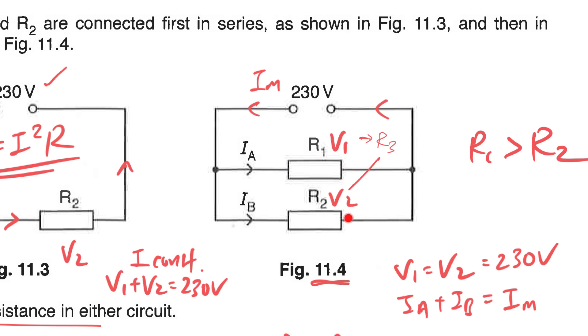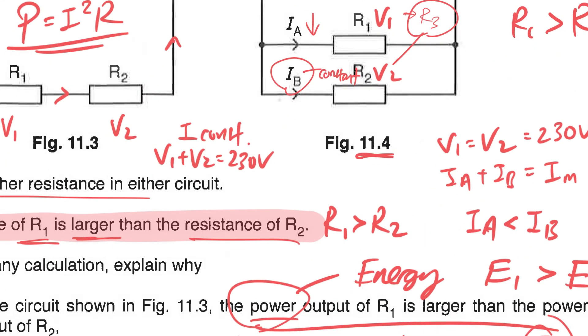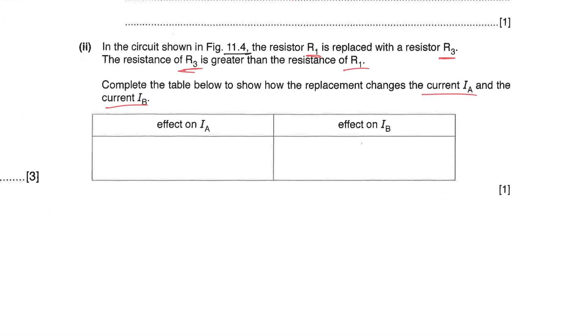If they are parallel no matter what the potential difference will be the same. In other words this R2 and the current will remain the same because it's independent. Remember when things are connected in parallel, when one is spoiled or the other one is on and off, this branch will not be affected. It can still function as per normal. So since R3 is much greater that means the current in IA will be much lower and IB will be constant. So this one will decrease and this will remains constant.